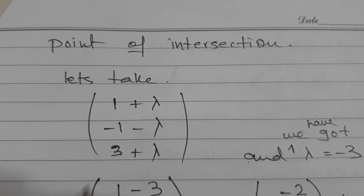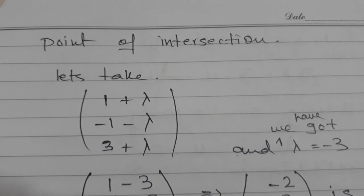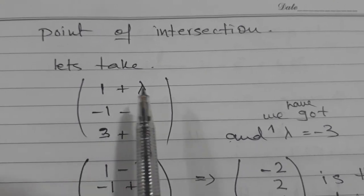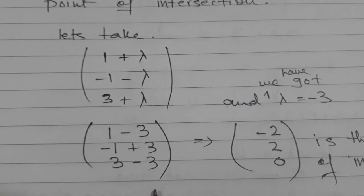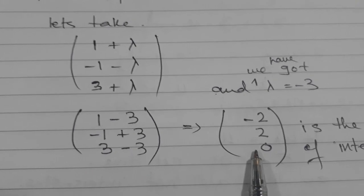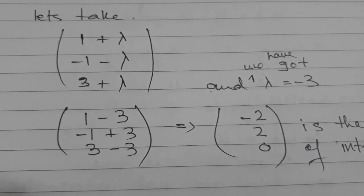So in any general point you have picked up, you can substitute the value either the lambda or the mu. I have substituted the value of lambda here and now I have gotten this point. So it is a point of intersection.